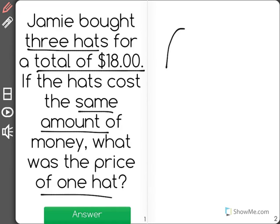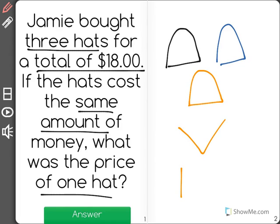So Jamie bought three hats. Now I don't know what these hats look like, I'm just gonna draw these goofy hats here. And we know that those three together cost, hey it looks like a mouth came out, cost a total of $18.